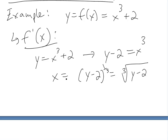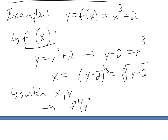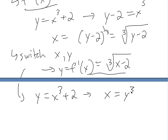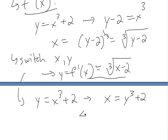This is basically what the inverse is. Usually they would switch the x and y so that it looks like a regular function. So we'll get f inverse of x, or y equals the cube root of (x minus 2). You could have also just gone straight from y equals x cubed plus 2, switched x and y right away to get x equals y cubed plus 2, solved for y, and gotten the same result: y equals the cube root of (x minus 2).